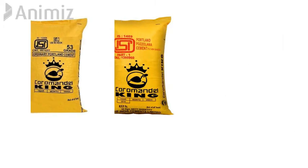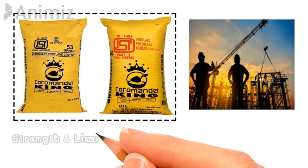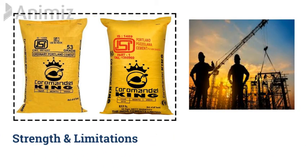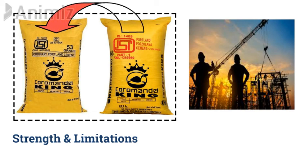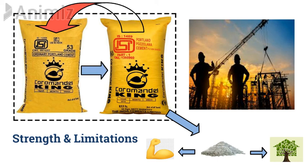Both OPC and PPC are commonly used cement in construction, and both have their strengths and limitations. Nowadays, PPC is used as a substitute for OPC since it contains pozzolanic material, which helps to enhance the strength of concrete and also fulfills the green building criteria. As a result, most OPC manufacturers are now shifting to PPC.